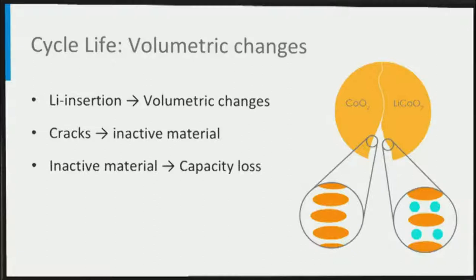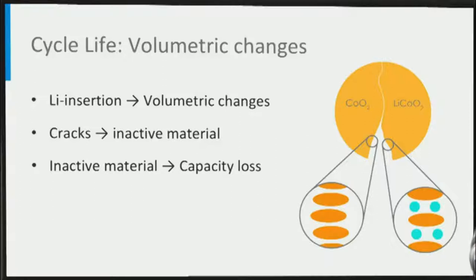Another aspect that can lower the cycle life of lithium-ion batteries is the repeated volume changes of the electrodes upon lithium insertion and extraction during battery cycling. During cycling, this may result in cracks in the electrode material; as a consequence the electrode material may become isolated from the current collector and thereby inactive, resulting in capacity loss over cycling. Depending on the specific electrode material, large structural changes typically play an important role in the cycle life of lithium-ion batteries.